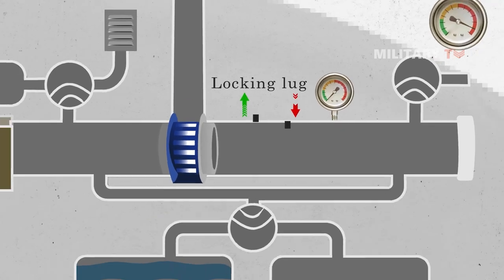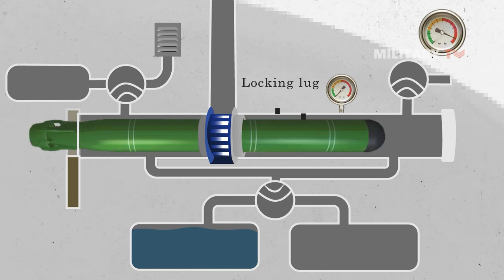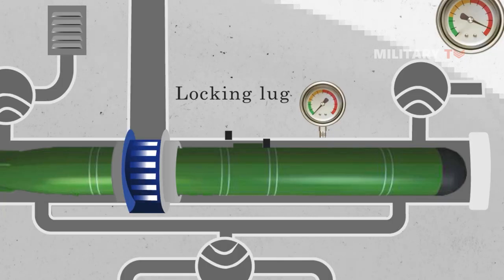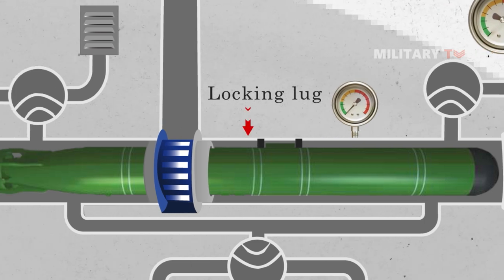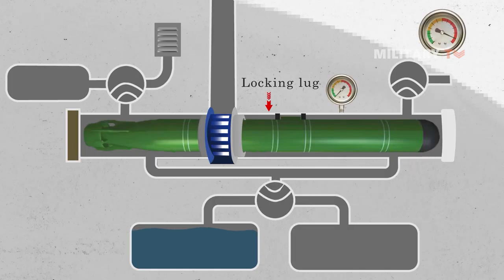Then, the breech door is opened to slide the torpedo in. Additionally, this can also be done using a hydraulic system. When the torpedo is moved against the locking lug in the tube, the locking lug comes down and secures the torpedo, and the breech door is closed and locked. The torpedo is now stably located in the tube and ready to fire.